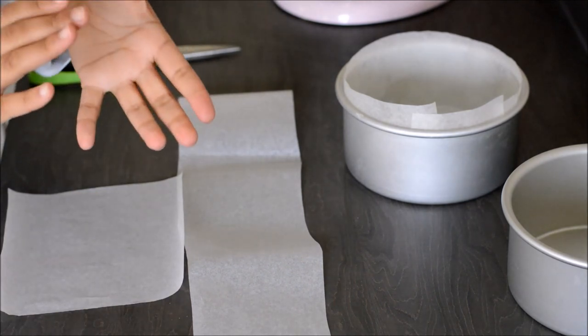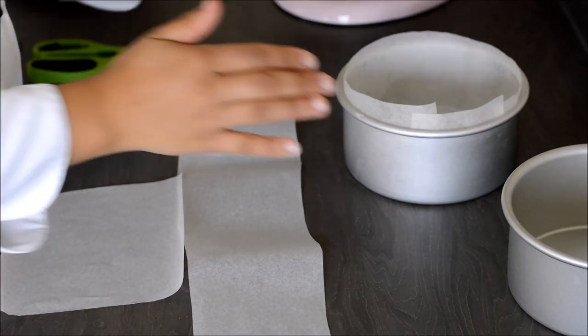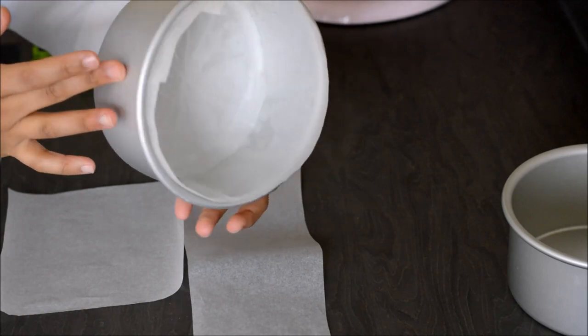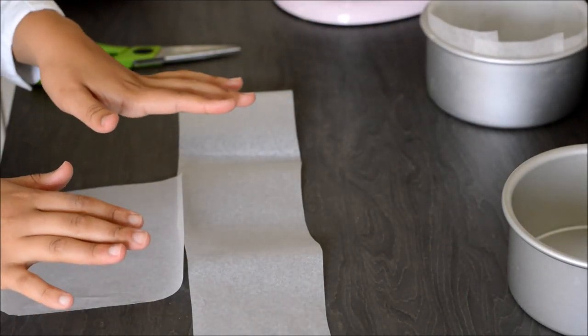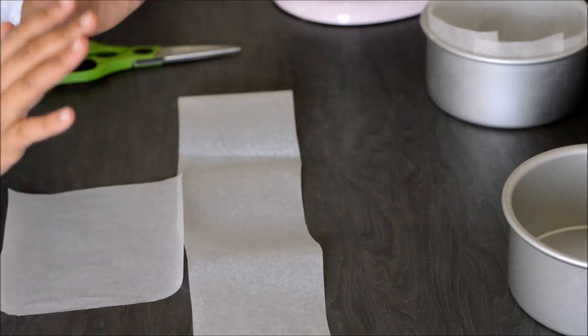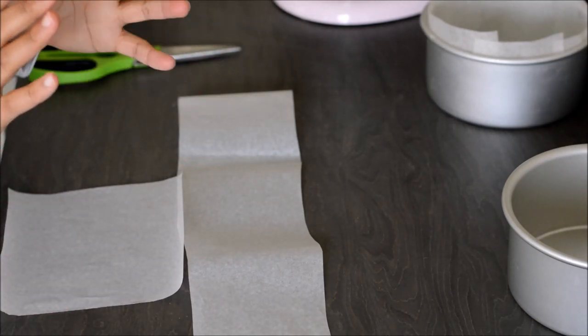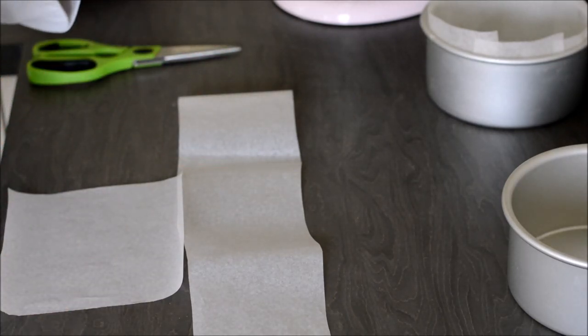So I'm going to show you a really easy way of lining your tins. This is what the finished product should look like. And it's really important that you line your tins before baking any cake to ensure that the cake doesn't stick to the side and it also gives a really even finish.